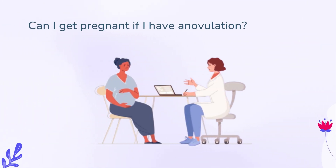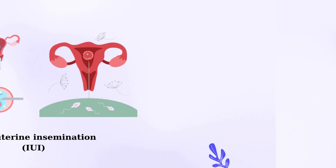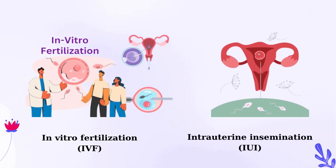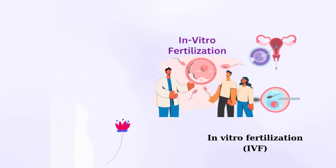Can I get pregnant if I have anovulation? Lifestyle changes and/or medication can often treat anovulation, which means you'll have an opportunity to get pregnant. But there are many other factors that contribute to a successful pregnancy. If you're receiving treatment for anovulation and are still having a difficult time getting pregnant, your provider may recommend in vitro fertilization, IVF, or intrauterine insemination, IUI.